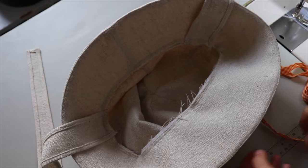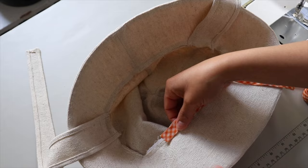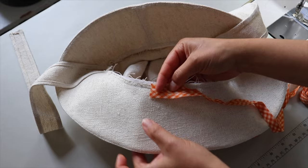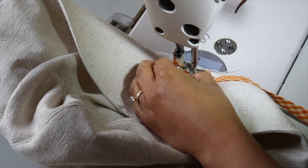To cover this raw edge, I'm using a piece of bias tape I made. You'll need about 26 inches or 66 centimeters. My binding is folded in on both sides so I open up one side and sew it along the raw edge to the seam, leaving a little space at the start of the binding.